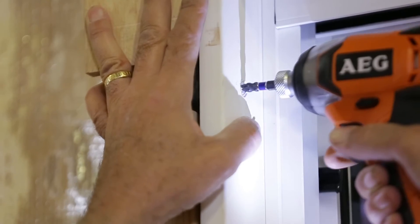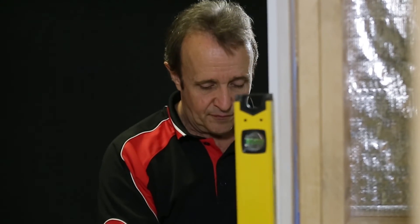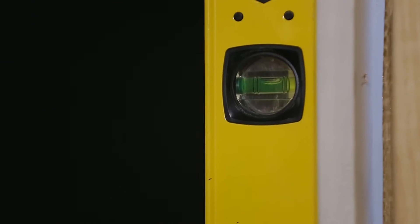Fix the top corners in place. Check jams are plumb using your level and adjust the door position as necessary to make sure the frame is plumb, level and square.